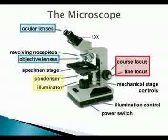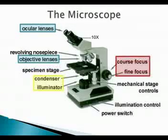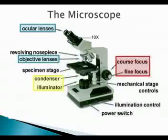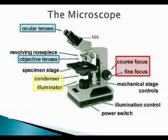If you use the oil immersion lens, you're going to break your slides because it's designed to be immersed in oil. To figure out the total magnification, you multiply the ocular lens, which is 10x, by whatever objective lens you're on. For example, if you're on a 4x objective, you multiply by 10 to get 40x magnification. If you're on a 40x objective, you multiply by 10 to get 400x.